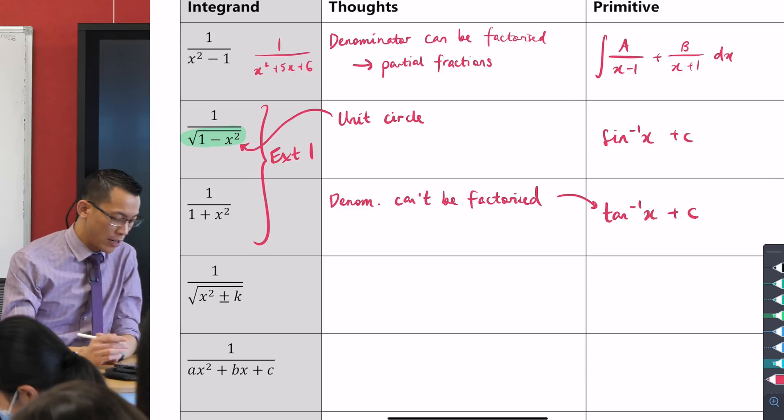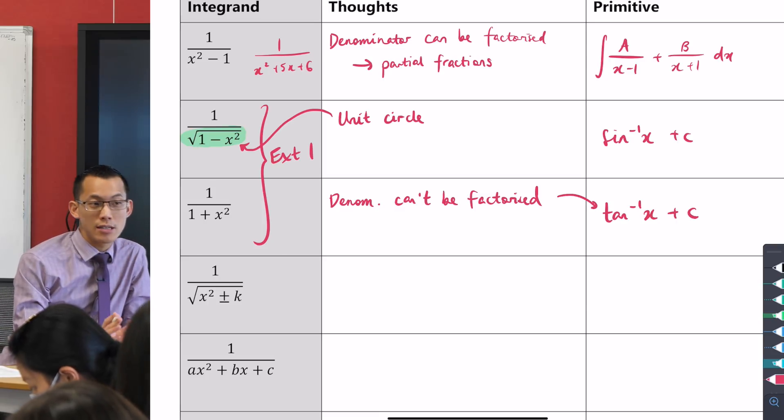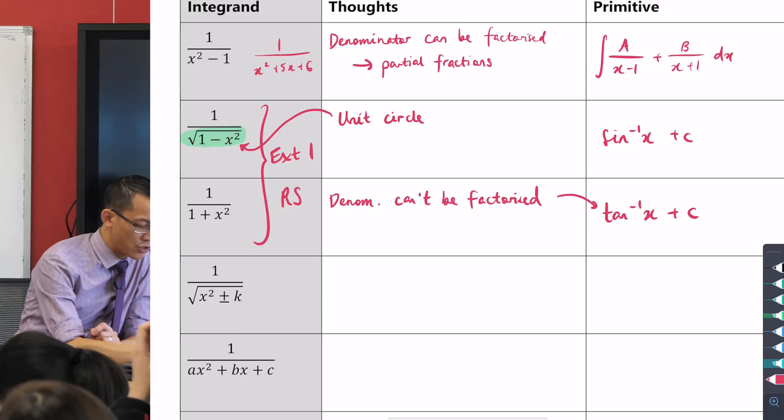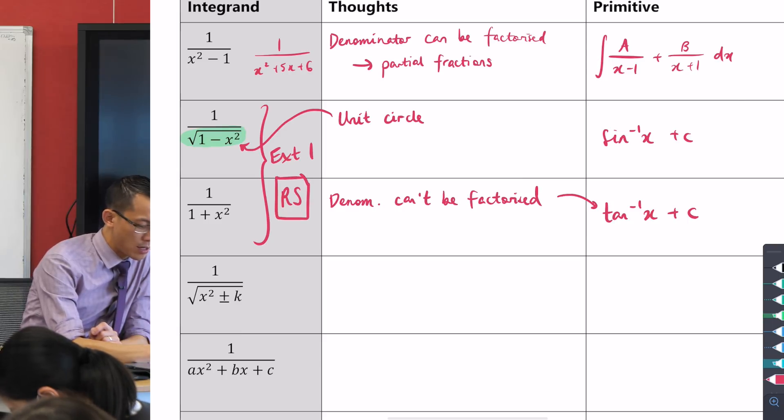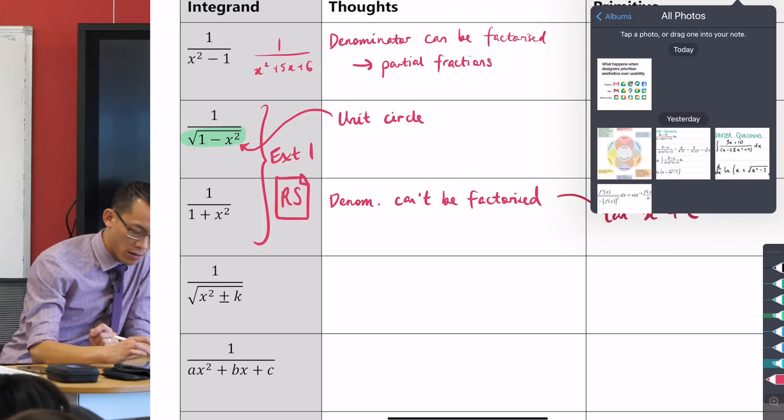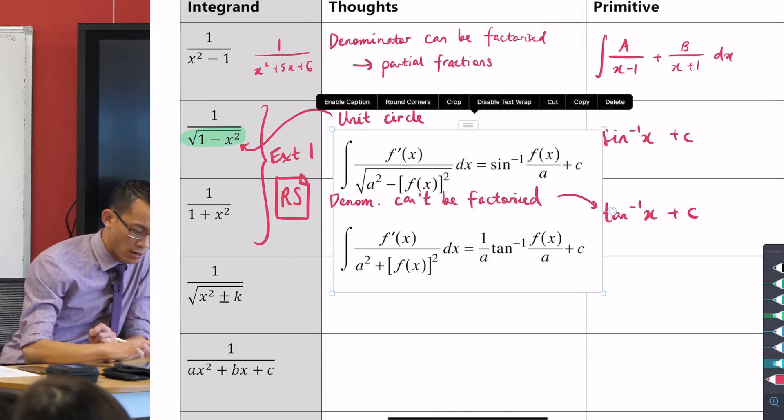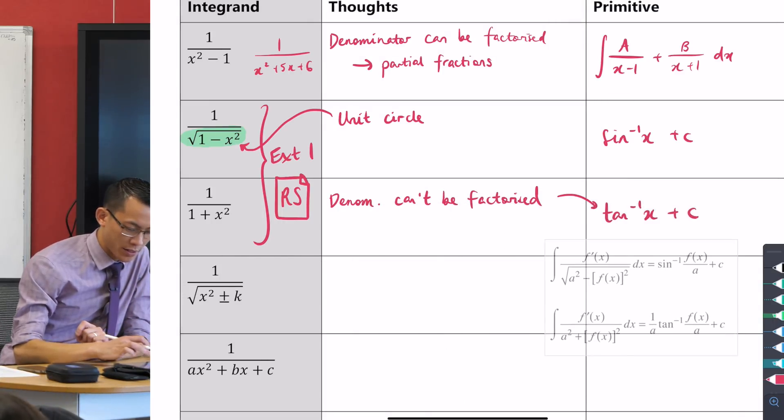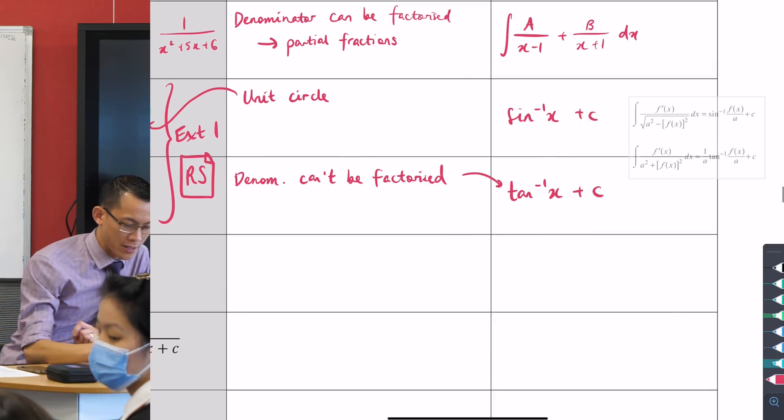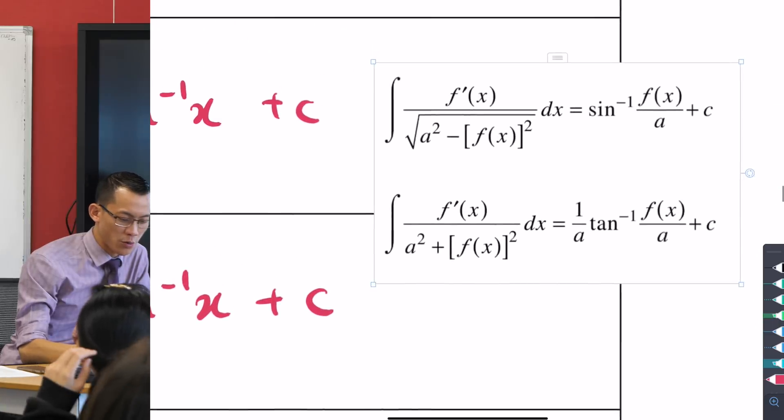Now, just as I mentioned before, and it's worth noting down, because these are still extension 1 results, you have the benefit of the reference sheet telling you what these results actually are. This is what you'll see on the reference sheet.